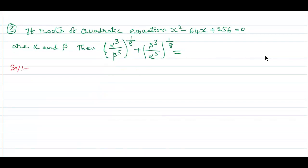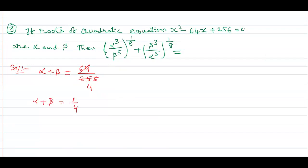By observing the quadratic equation x squared minus 64x plus 256 equals 0 with roots alpha and beta — tell me what is the sum of the roots. Alpha plus beta equals 64, and 64 times 4 is 256, so 4 times 4 is 16, 4 times 6 is 24. Alpha plus beta equals 1 by 4. What is the sum of the roots? 64. Product of the roots.